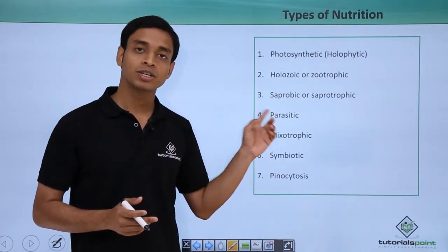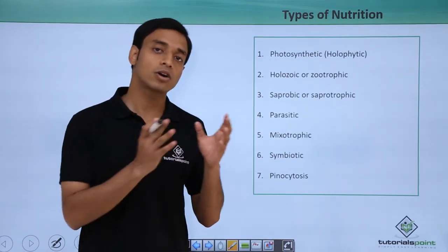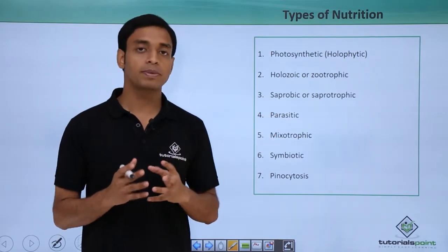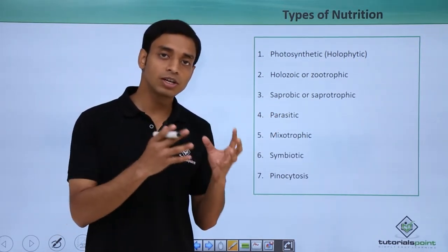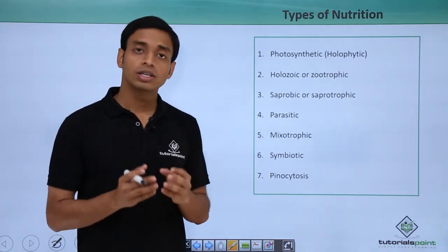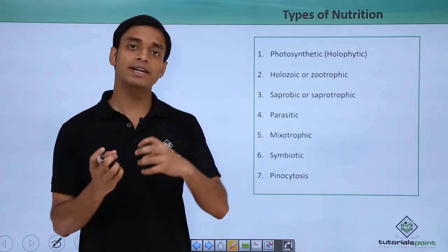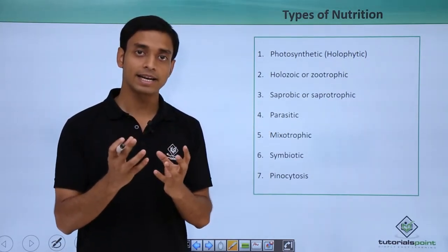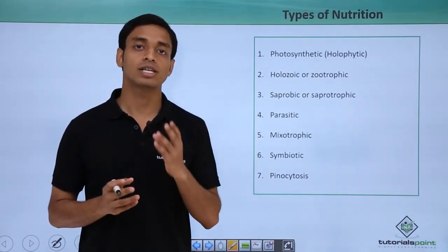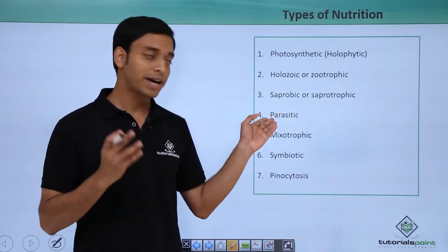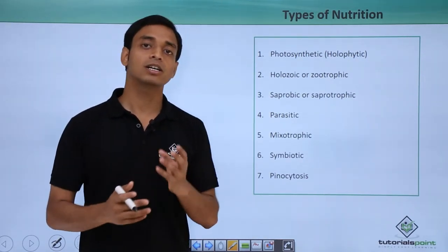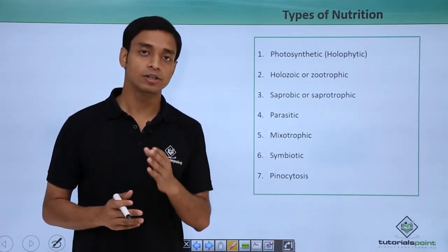The next is parasitic nutrition. Here the organism is dependent on other organisms for its food or nutrition supply — they cannot prepare their own food and feed on the prepared food of other organisms. The organism that is dependent on the other is known as the parasite, whereas the organism on which the parasite is dependent is known as the host. The parasite feeds on the nutrition made by the host. This is parasitic nutrition.